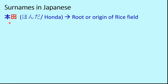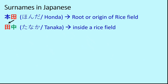Now the rice field kanji comes at the beginning, so it becomes 'ta' and not 'da'. Combined with the kanji for 'naka', meaning inside, this gives us Tanaka — a very popular surname in Japan, meaning 'inside a rice field.'